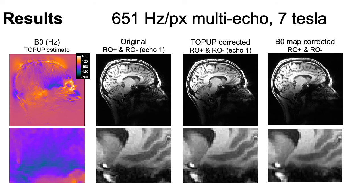For multi-echo data acquired at 7T, we see again that the multi-echo acquisition reduces distortion compared to single echo. Top-up can correct that distortion, and the B0 map correction is slightly less successful.